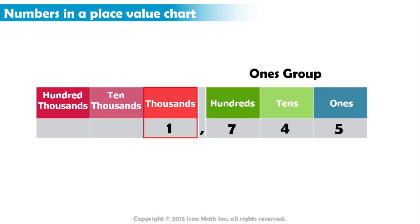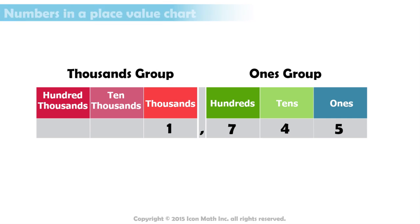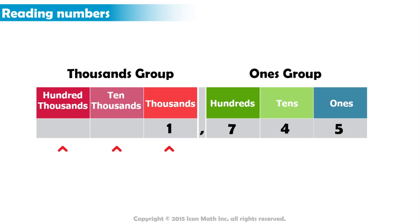The thousands place, the ten thousands place, and the hundred thousands place go into the next group of three digits, the thousands group. To read numbers separated by commas, we start from the left and read each group as a three-digit number, followed by the value of the group.